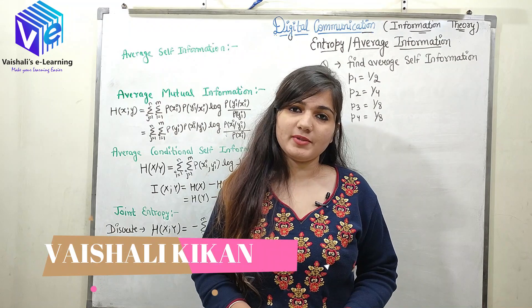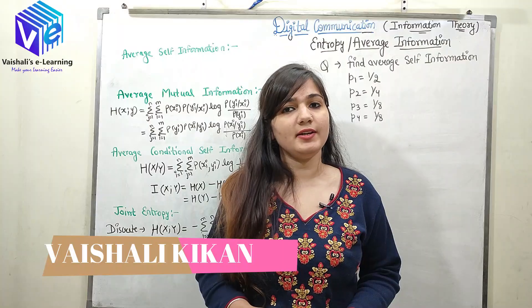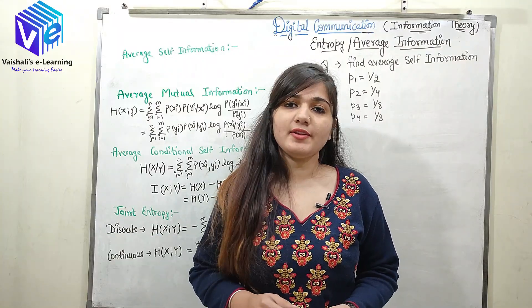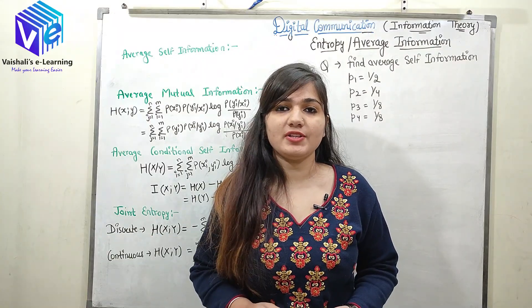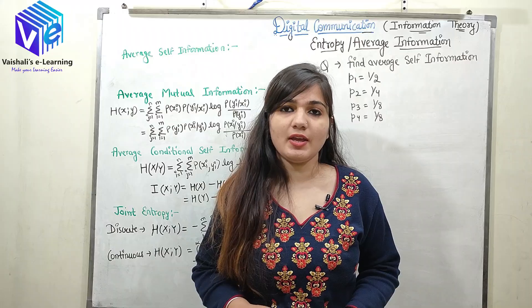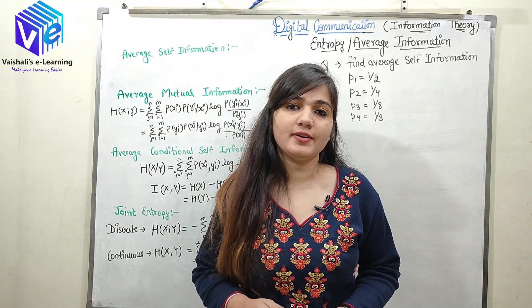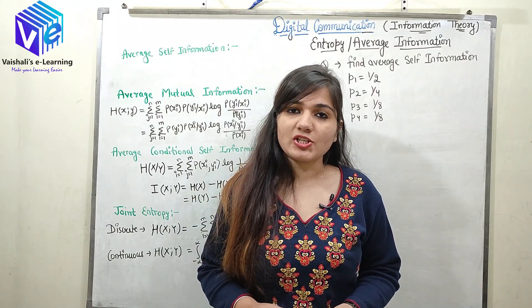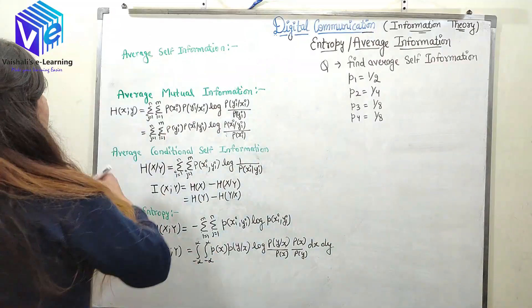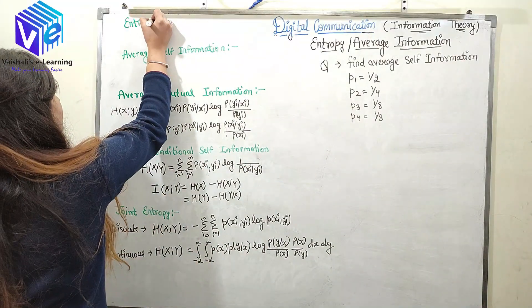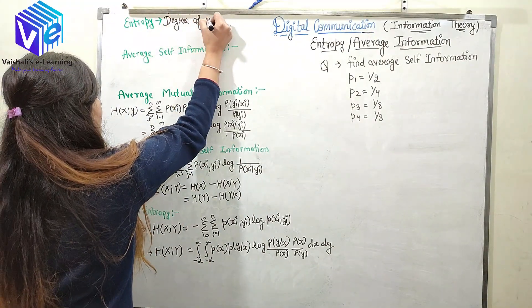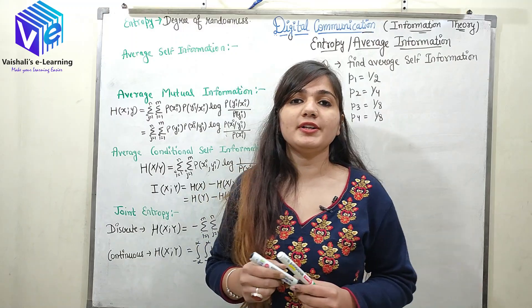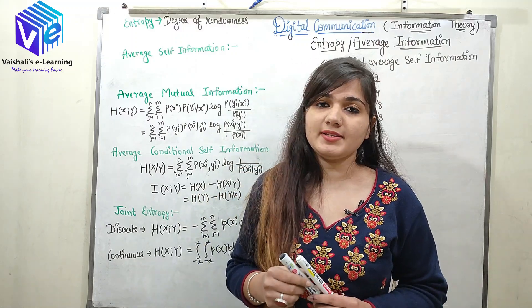Welcome to the second part of the information theory in digital communication series. Here we will discuss entropy, or average information. The word entropy actually means randomness, and we need to find out the degree of randomness of a message.